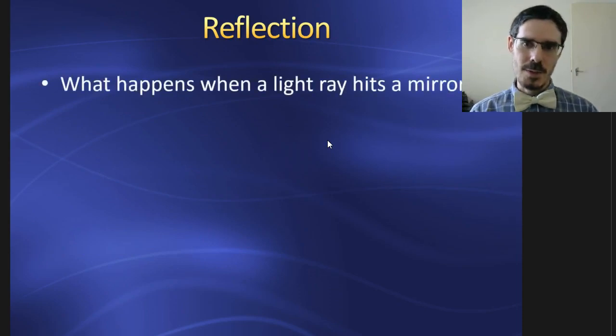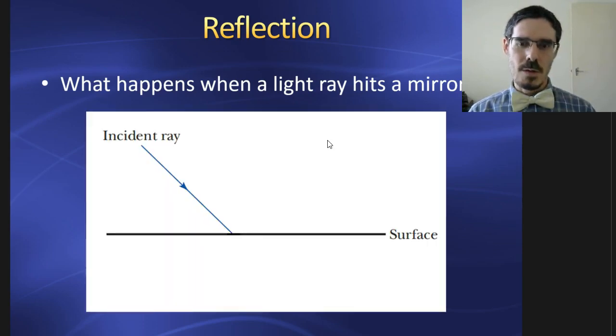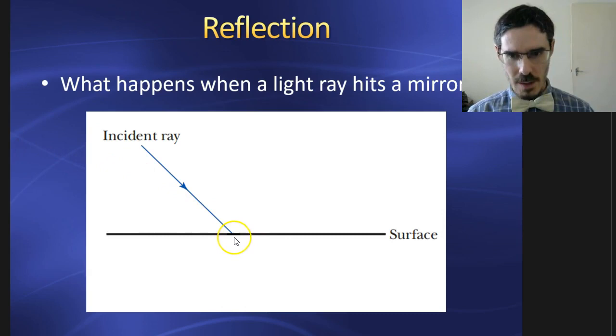What happens when a light ray hits a mirror or some other surface? The light ray comes in and hits the surface. What happens next?